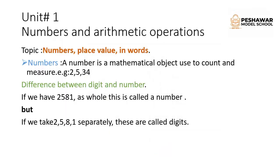That is Unit Number One: Numbers and Arithmetic Operations. Before starting the topic, I would like to explain the name of the unit. Numbers are the combination of different digits, and arithmetic means the signs which we use in maths, like plus, minus, multiply, divide, etc. These are called arithmetic operations.